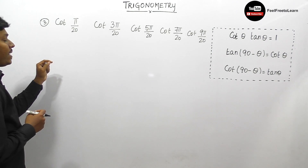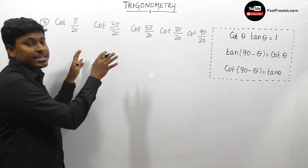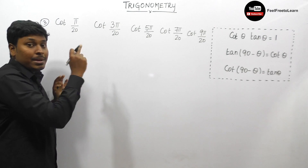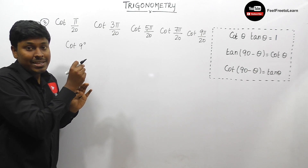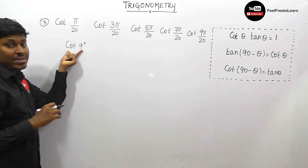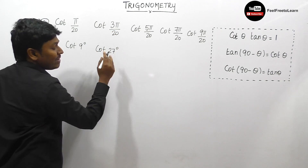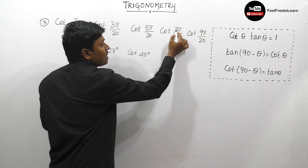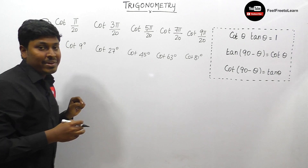Question number 3: cot(π/20) · cot(3π/20) · cot(5π/20) · cot(7π/20) · cot(9π/20). We need to convert radians to degrees. Since π = 180°, π/20 = 9°. So the terms become cot 9°, cot 27°, cot 45°, cot 63°, and cot 81°. We know cot 45° = 1.